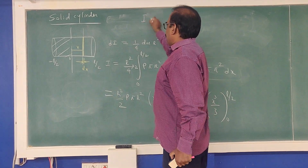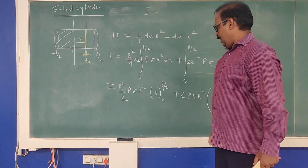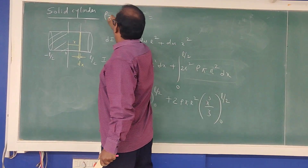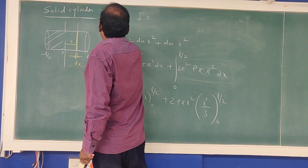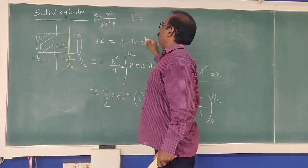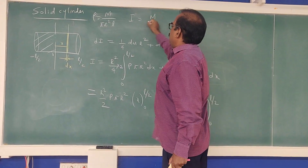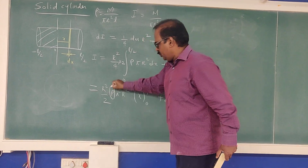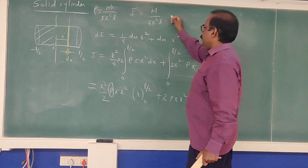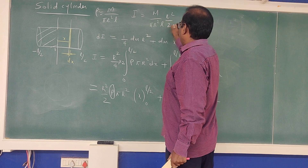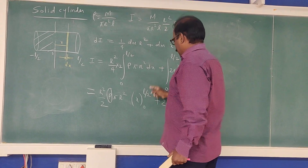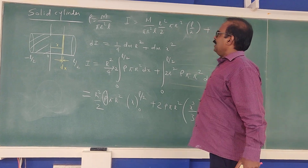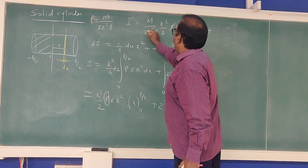Substituting ρ = M/(πR²L), the πR² terms cancel. The result simplifies to I = MR²/4 + ML²/12.